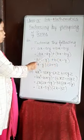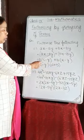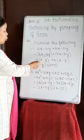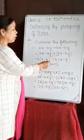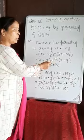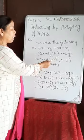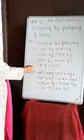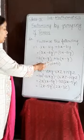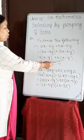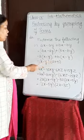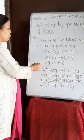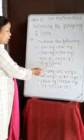In the first group, A is common in both terms, so we take out A, leaving X minus Y in the bracket. In the second group, B is common, so we take out B, leaving X minus Y in the bracket. Now X minus Y is common in both groups, so we take out X minus Y, leaving A plus B in another bracket. The factors are (X minus Y)(A plus B).